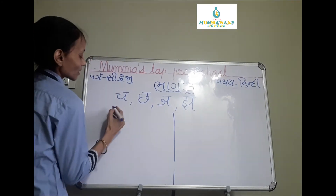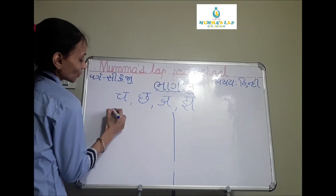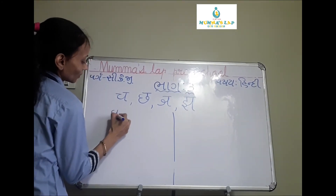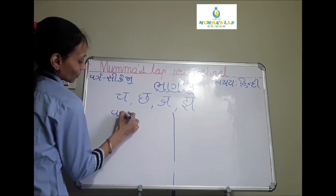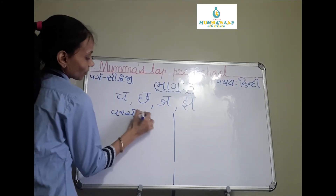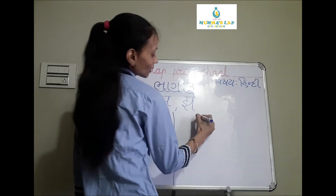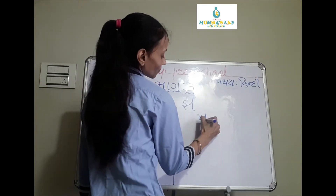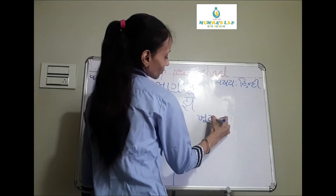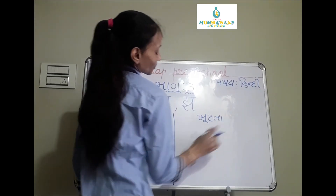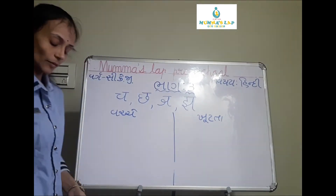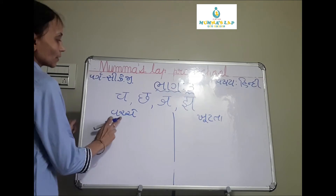Left four sides, right? Then left four sides, right? For example.